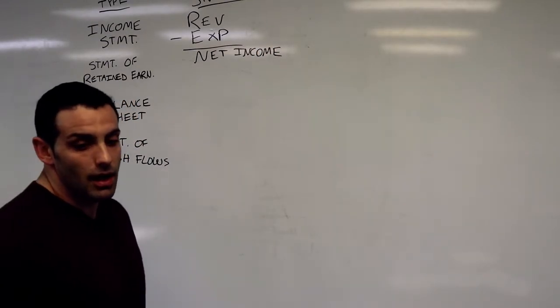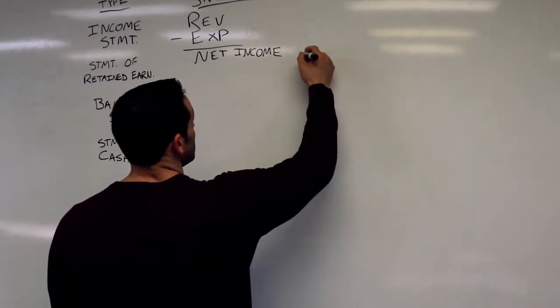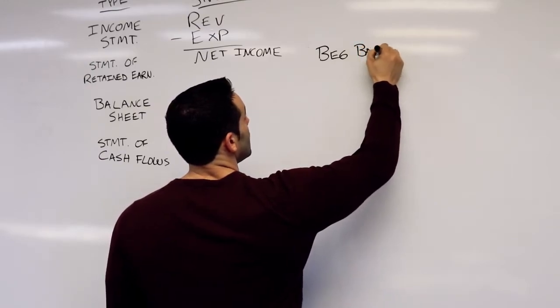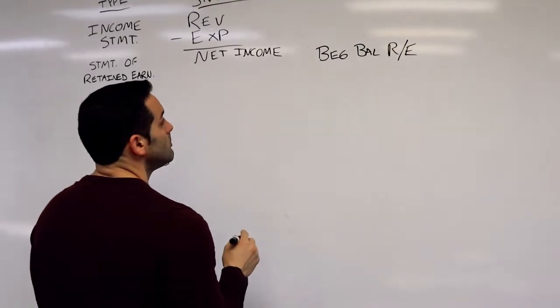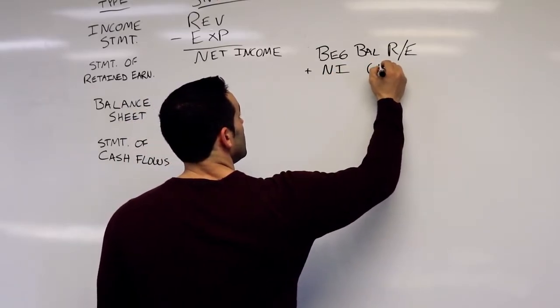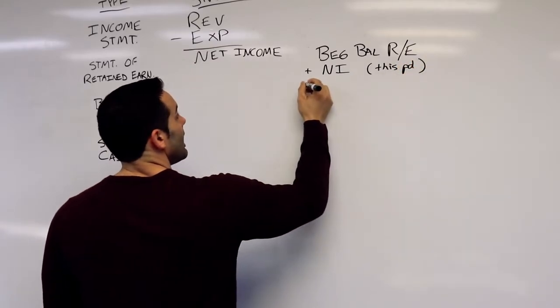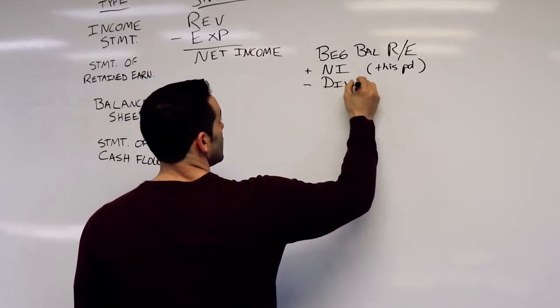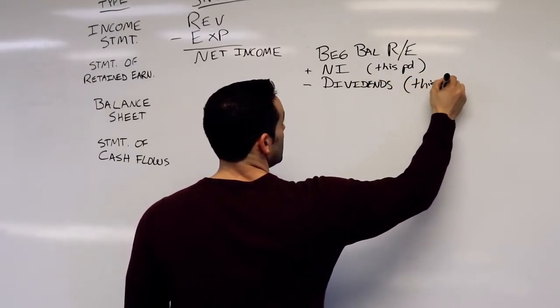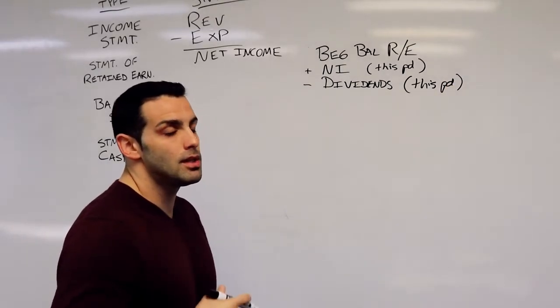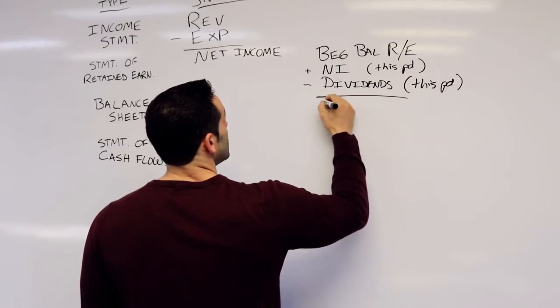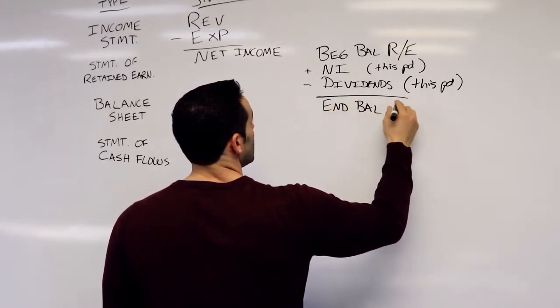The statement of retained earnings looks like this: beginning balance retained earnings plus net income for that period minus dividends for this particular period, could be quarterly, could be yearly, depends on the statement. This will give us our ending balance of retained earnings.